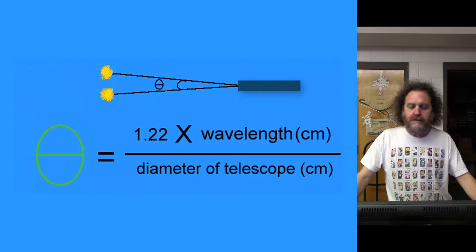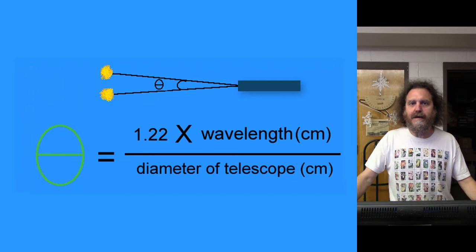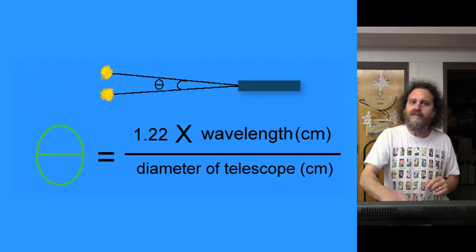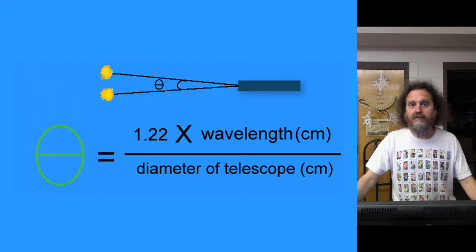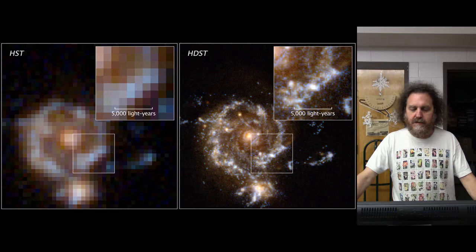This angular resolution is kind of a physical limit — this is as good as you can do if you build the reflecting mirror as perfectly as you possibly can. This is a foundational limit set by the laws of physics. Obviously it's possible to build a mirror that's not made very well, and then the angular resolution won't be as good as indicated by this equation. But if you build it as perfectly as you can, this is the physical limit you reach. The bottom line is: the bigger the telescope, the more clearly it can see what it's looking at. So there's another reason for building bigger telescopes.